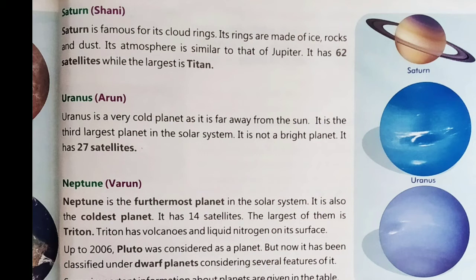Triton has volcanoes and liquid nitrogen on its surface. Up to 2006, Pluto was considered as a planet. But now it has been classified under dwarf planets considering several features of it.